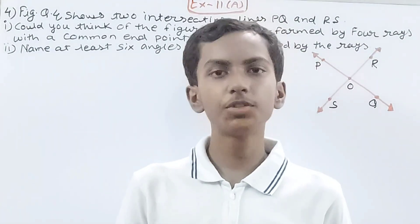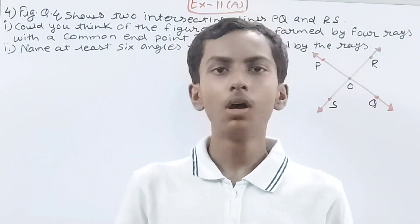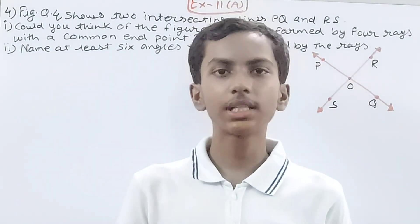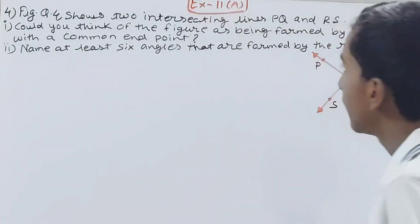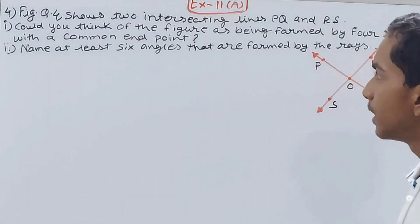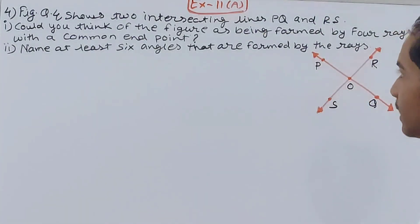Hello friends, welcome back to my YouTube channel Unlock Your Learning. In this video we are going to solve ICSE Mathematics Class 6, Chapter 11, Exercise 11A, Question 4. The figure in question 4 shows two intersecting lines PQ and RS.